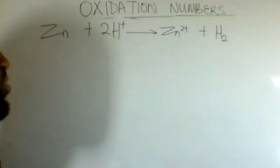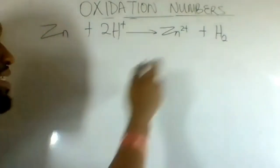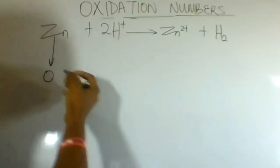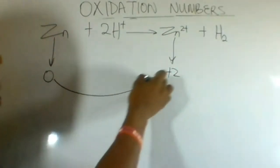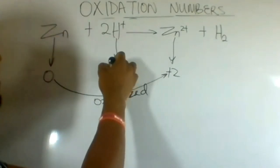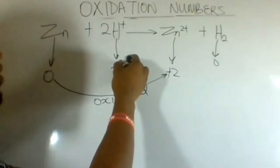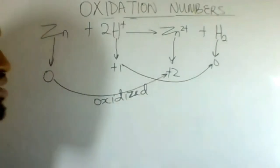One final example to show oxidizing and reducing agents: zinc reacting with hydrogen ion to form zinc ion and hydrogen gas. Zinc on the left has a charge of zero; zinc on the right has a charge of plus two — zinc increased from zero to plus two, so zinc was oxidized. Hydrogen ion on the left is plus one and on the right is zero. Hydrogen ion moved from plus one to zero — that is a reduction.